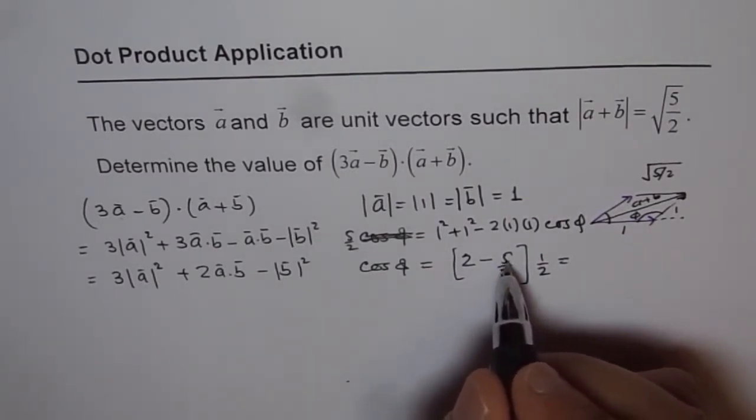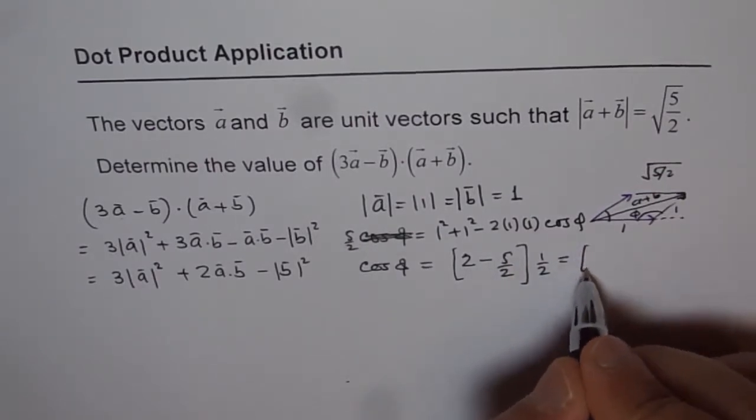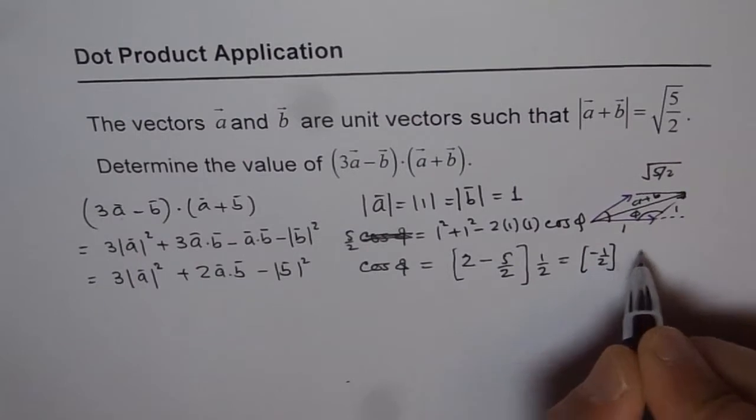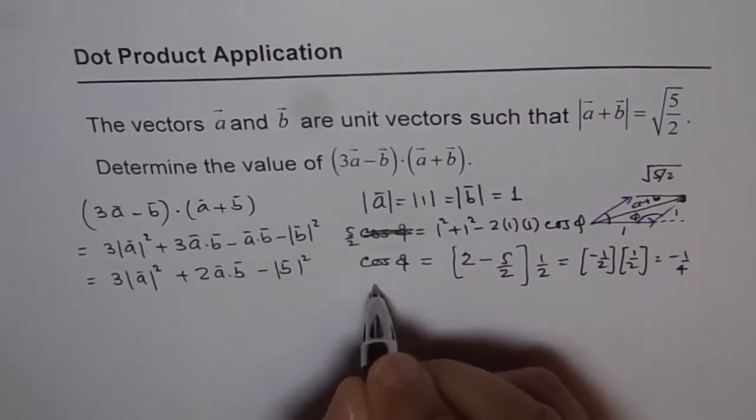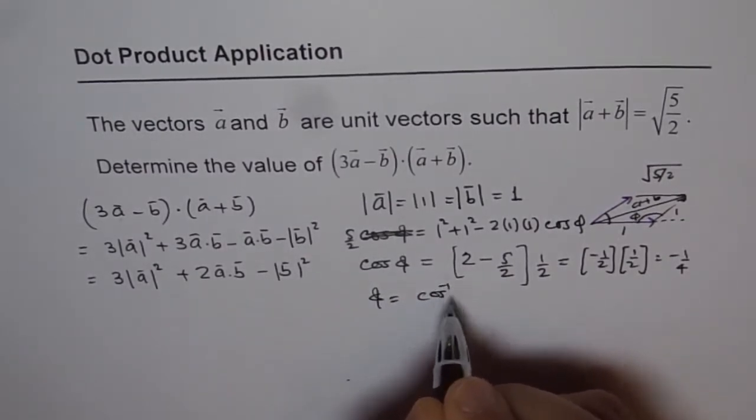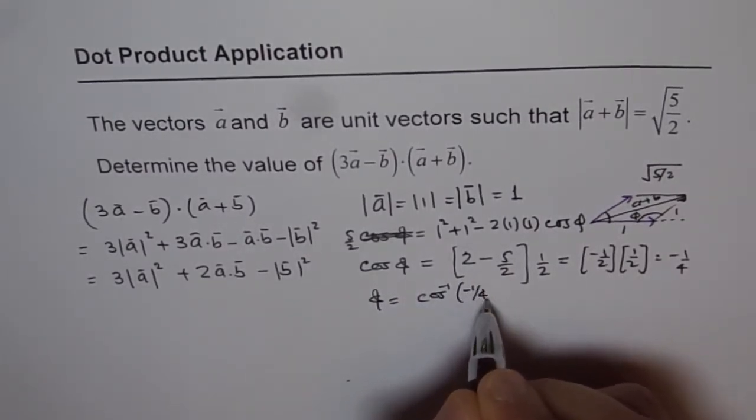4 minus 5 is minus 1, so it is minus half times half, which is equal to minus 1 over 4. So phi is equal to cos inverse of minus 1 over 4.